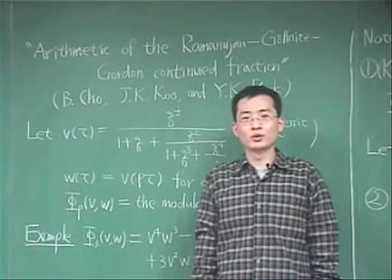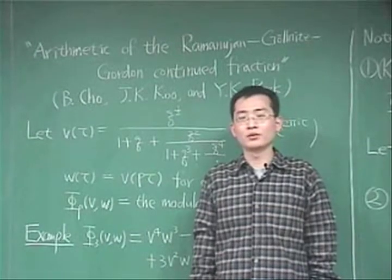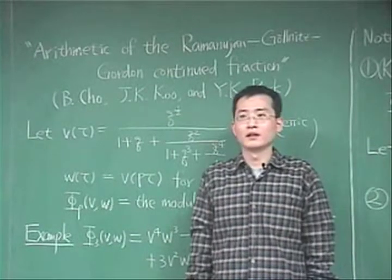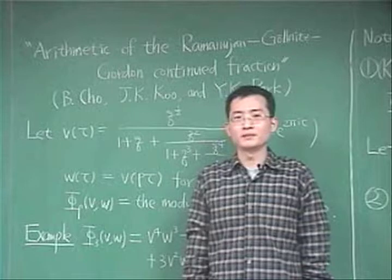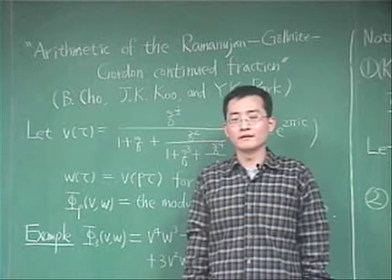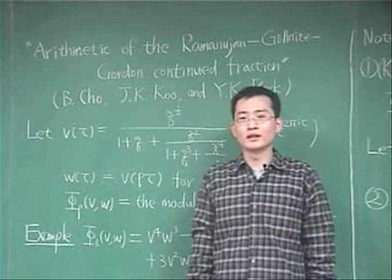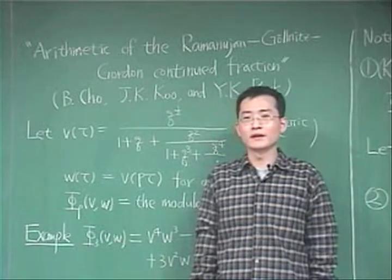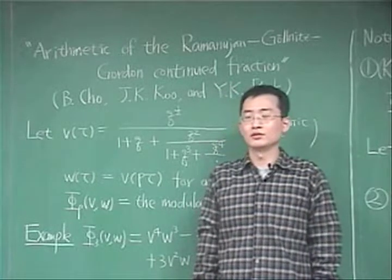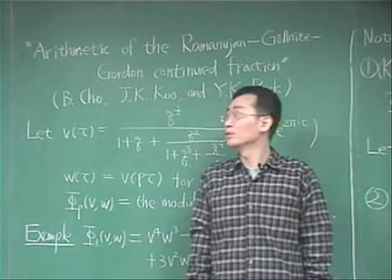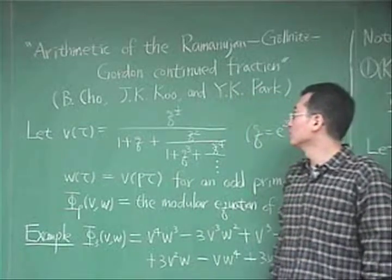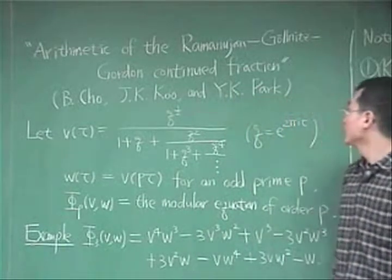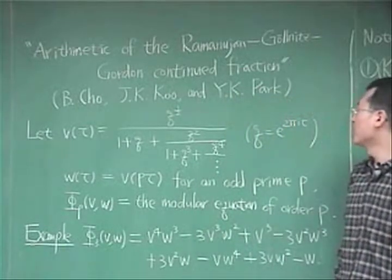Hi, I'm Bumgyu Jo from KAIST, Korea, and I would like to introduce my paper, 'Arithmetic of the Ramanujan-Gelbart-Gordon Continued Fraction,' which is a joint work with my advisor, Professor Ja Kyung-Koo, and my colleague, Dr. Yoon Kyung-Pak.